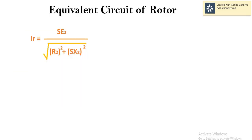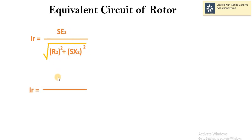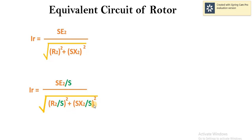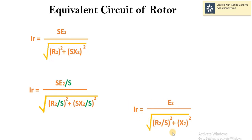For the equivalent circuit of rotor, we know the equation: i_r equals s times e2 divided by under root of r2 squared plus s times x2 squared. Dividing the left hand side of the equation by s, we get s times e2 over s, divided by under root of r2 over s whole squared plus x2 whole squared. Here s gets cancelled out and we get this modified equation. According to this equation, our equivalent circuit of rotor would be this.